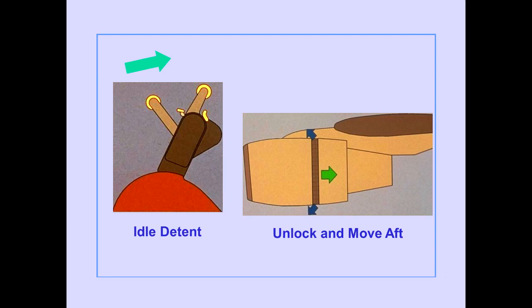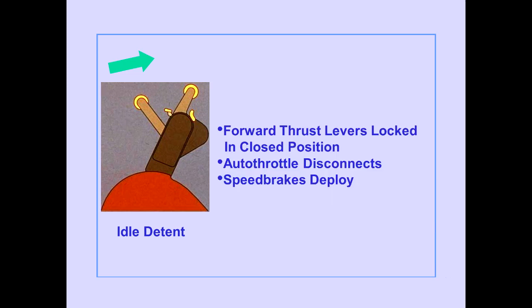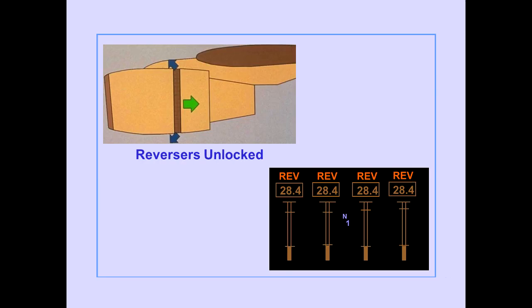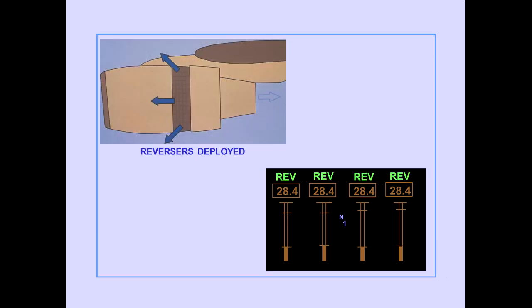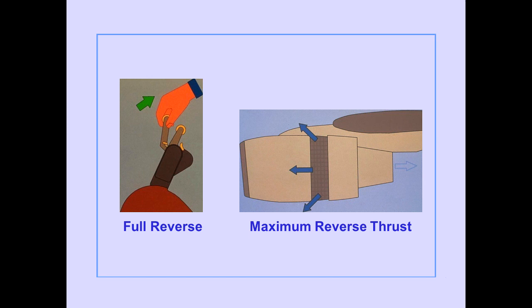Raising the reverse thrust levers to the idle detent applies bleed air to the reversers; the reversers unlock and move aft. When the reverse thrust levers are raised to the idle detent, the forward thrust levers are locked in the closed position, the auto-throttle disconnects, and speed brakes deploy if the speed brake lever is down. When the reversers are unlocked, amber reverser status enunciators are displayed above the N1 indications. When the reversers are fully deployed, the reverser status enunciators change color to green, and the thrust lever interlocks release.